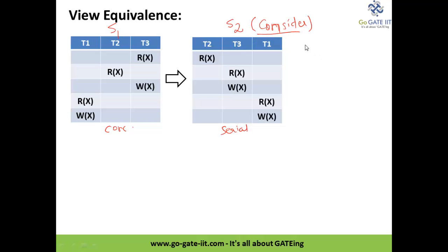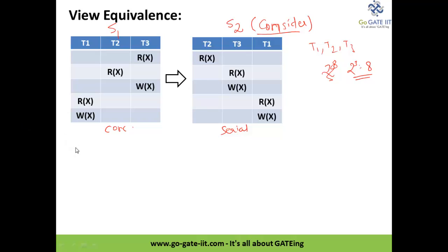As discussed in the previous video session, there are three transactions T1, T2, and T3 in the schedule. So there are 2 raised to 3, which equals 8 possible serial schedules. We have assumed T2, T3, T1 because we cannot work on all 8 possible solutions — that's also why this falls under NP-complete problem.